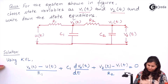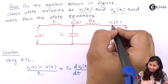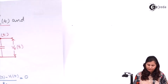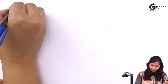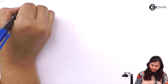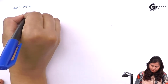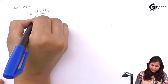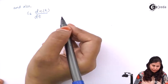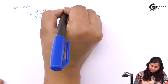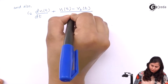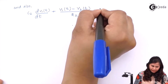Now at this second node we will also apply KVL and write the equations. Our equation will be C2 dv1(t)/dt, the current across capacitor C2, plus v1(t) minus v2(t) upon R2, equals zero.